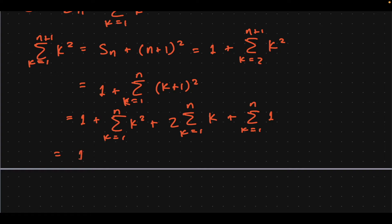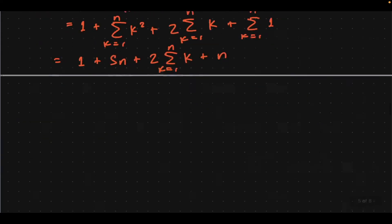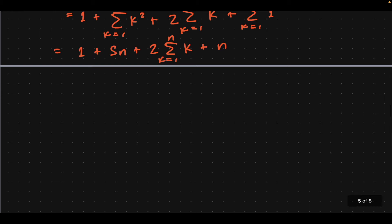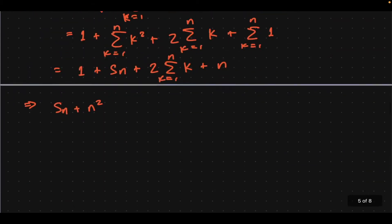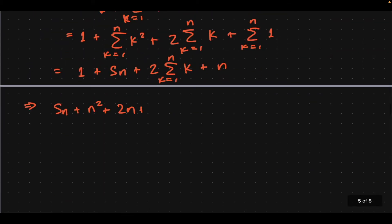Well, this simplifies nicely to 1 plus — this is just Sn again — plus this: the sum of positive integers. Let's assume we don't know it. This will be n, and thank God it's finite for that purpose. This will give you, with the left-hand side, Sn plus — expanding the square here — n squared plus 2n plus 1 equals 1 plus Sn plus 2 times sum from k equals 1 to n of k plus n.